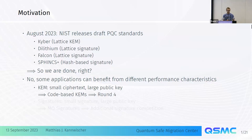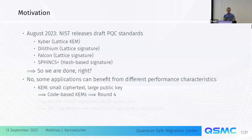For example, there's code-based schemes that can give you small ciphertexts and large public keys, which is sometimes preferable to a lattice scheme that has medium ciphertexts and medium public keys. That's why NIST keeps studying code-based schemes in the fourth round of evaluation.